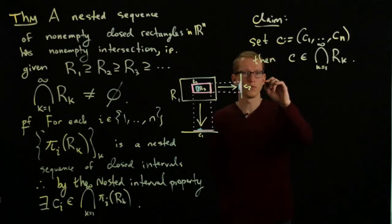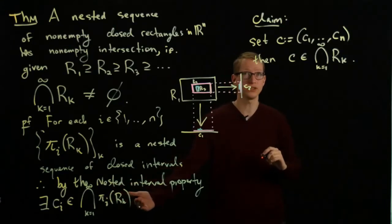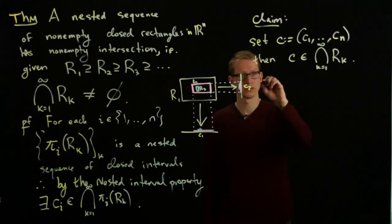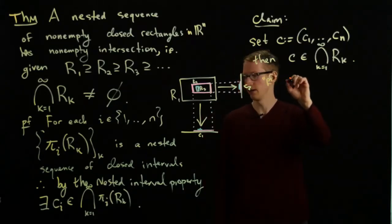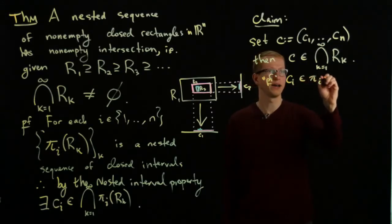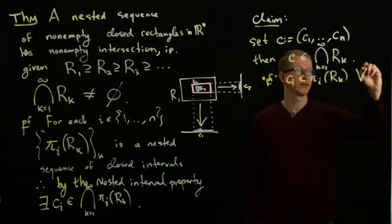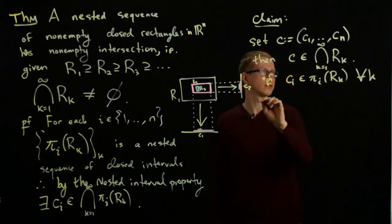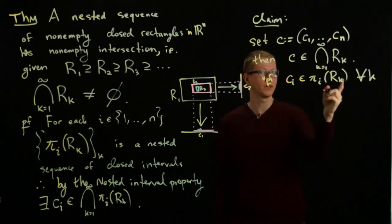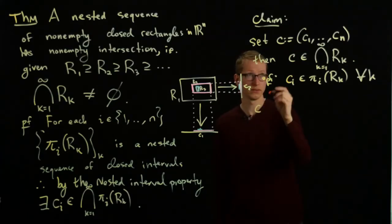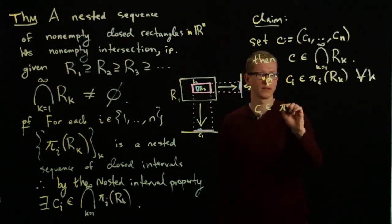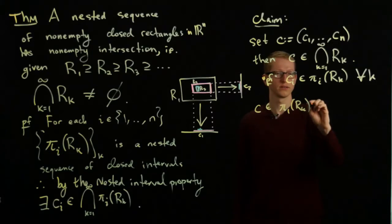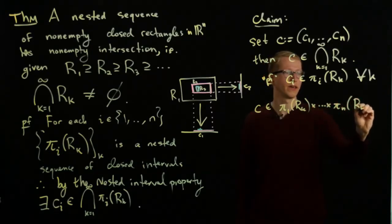For a proof of this claim, we know that each ci is in the infinite intersection, so it has to be in every single one of its components. A mini-proof: ci is an element of πi(Rk) for all k. Therefore, the element c is exactly in the product of all of these intervals: π1(Rk) × ... × πn(Rk). This is also true for all k.